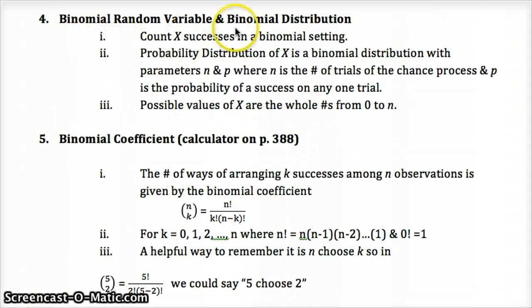We count X successes in a binomial setting. We'll use a capital X. The probability distribution of that is a binomial distribution, where N is the number of trials, and P is the probability of success on each trial. We'll go on to use K as the number of successes in N number of trials. So N, how many times? Ten free throws. We're looking for probability of making six out of ten. So six would be the number of successes, K. N would be ten.